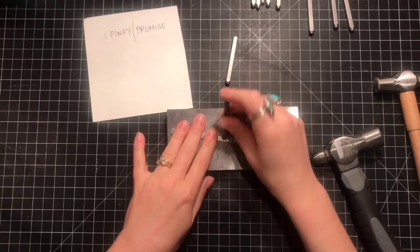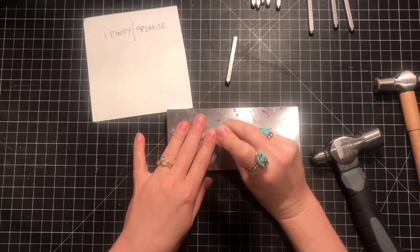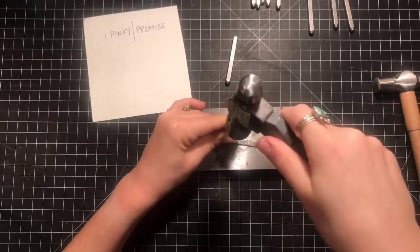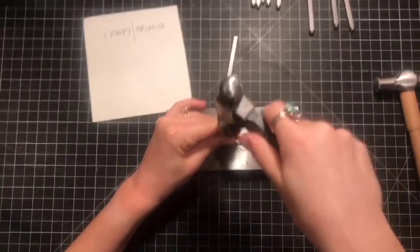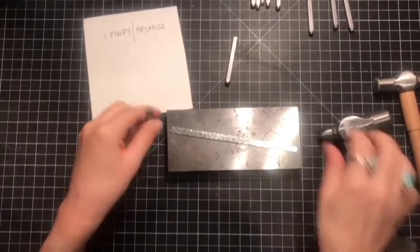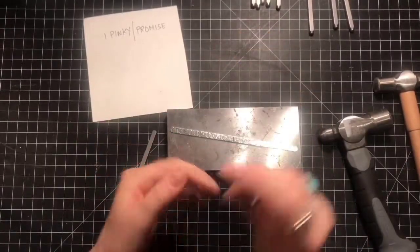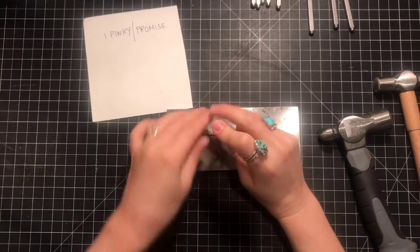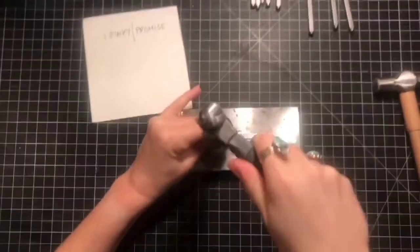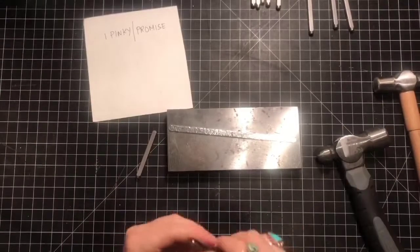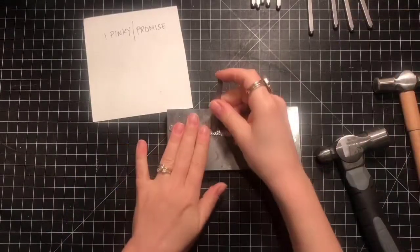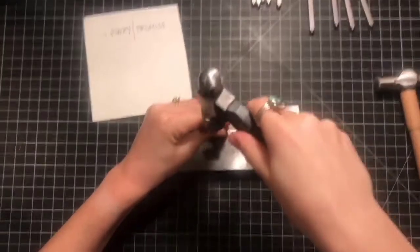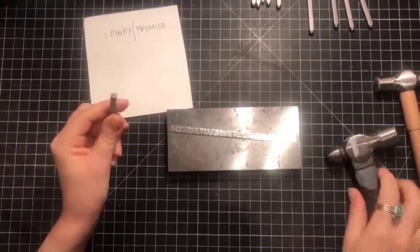So I like this saying, this is cute. And like I said, I had a customer order this, but a pinky promise. I like that. That's a good one to put on a bracelet. All right. Finishing up the last two letters here.